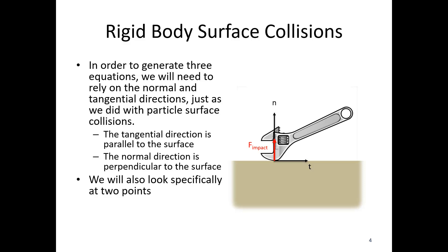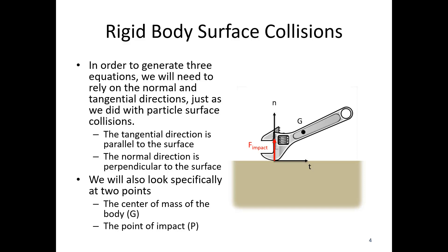We also need to look at two specific points. We need to identify the center of mass of the body — we're going to call that G — and also the point of impact of the force, which we're going to call point P. So where the wrench hits the ground is our point P. Between those coordinate systems and those points, we're going to have three equations we can work with.